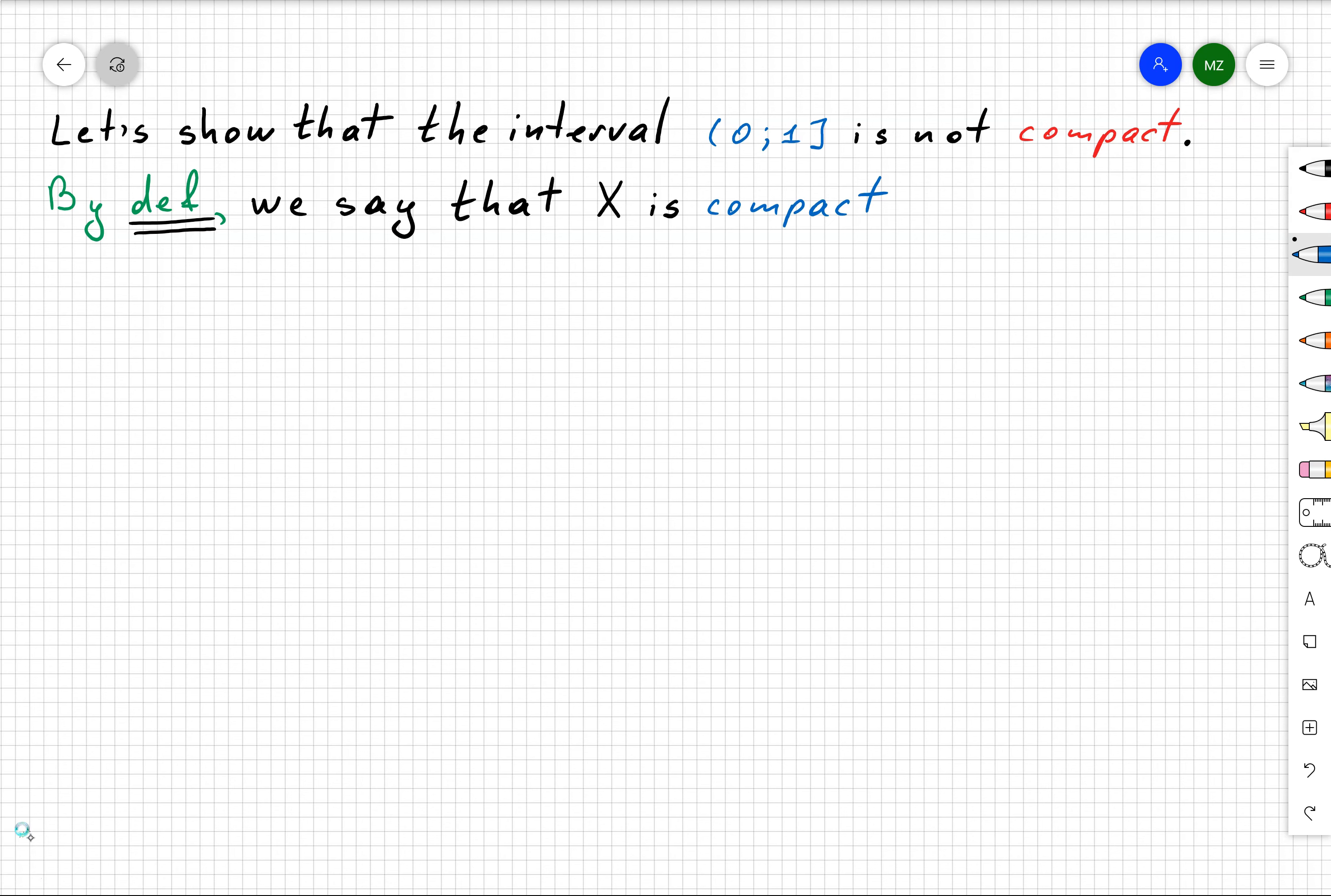We say that X is compact if for any open cover of X, there always exists a finite subcover of X.